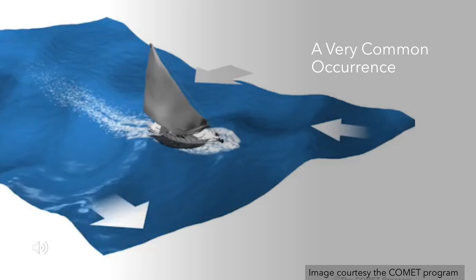One common example that happens here off the waters of southeast North Carolina and northeast South Carolina: in the fall, we may have a cold front that generates very short period waves out of the north or northeast, while at the same time we may have an underlying longer period swell out of the southeast from a distant tropical system such as a hurricane.